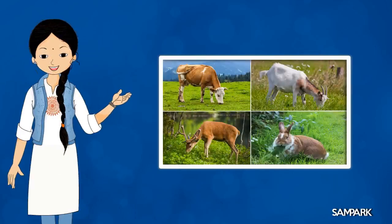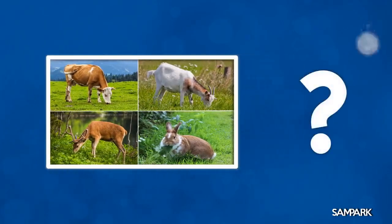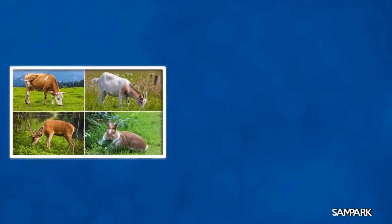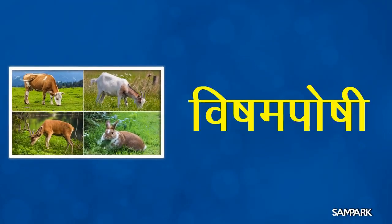अब ये जीव अपना भोजन स्वयं नहीं बनाते और स्वपोषी से भोजन प्राप्त करते हैं, उन्हें क्या कहते हैं बच्चों? उन्हें विषमपोषी कहते हैं। विषम यानी अन्य या दूसरा, और पोषी यानी पोषण करने वाला, तो दूसरे जीवों से भोजन प्राप्त करने वाला हुआ विषमपोषी।